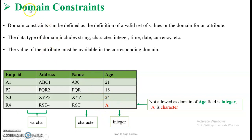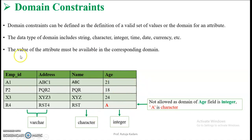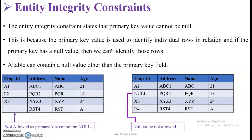Domain constraints can be defined as the definition of a valid set of values — the domain — for an attribute. For each column, once the domain is declared, only values belonging to that domain can be entered. The value of the attribute must be available in the corresponding domain.